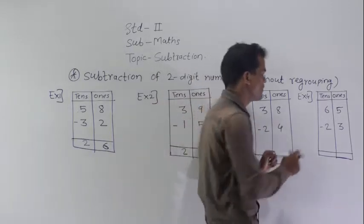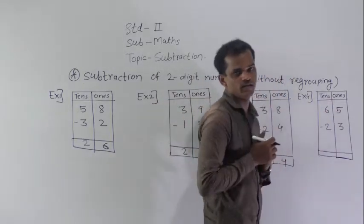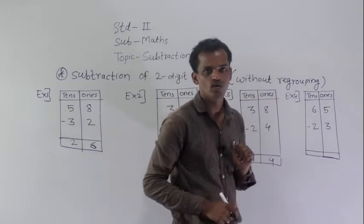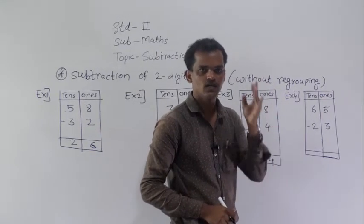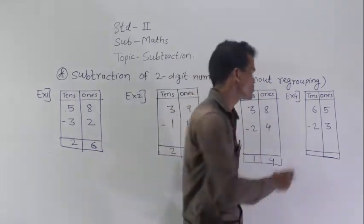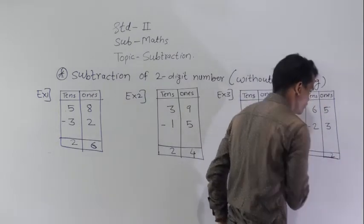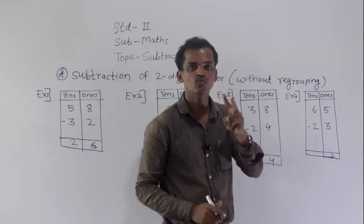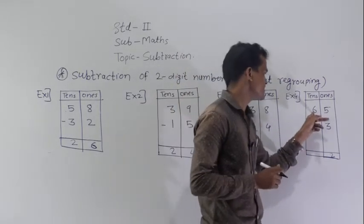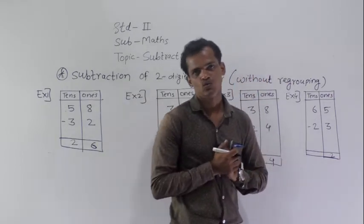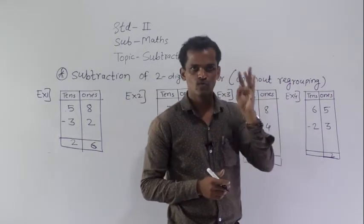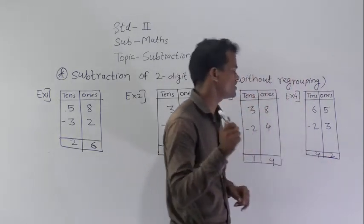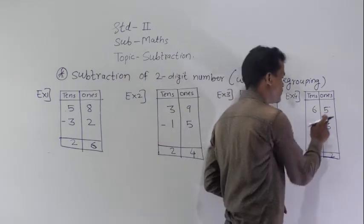Next example: 65 minus 23. Start from the ones place: 5 minus 3. Before 5: 4, 3, 2. So 5 minus 3 equals 2. Then the tens place: 6 minus 2. Count 2 fingers backward. Before 6: 5, 4. So 6 minus 2 equals 4. Therefore, 42 is the difference between 65 and 23.